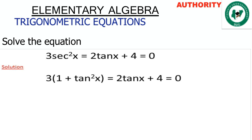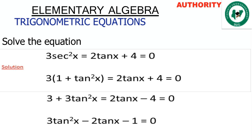Note that (1 + tan²x) is the same as sec²x. Now let's expand: 3 times 1 gives 3, and 3 times tan²x gives 3tan²x. Taking the remaining terms to this side: minus 2tanx and minus 4.